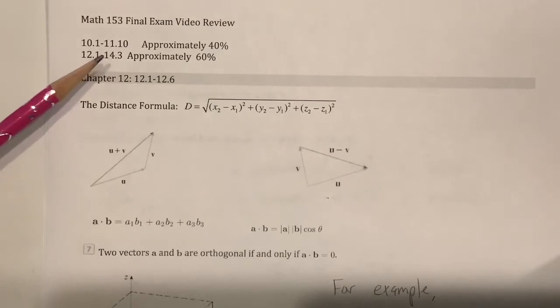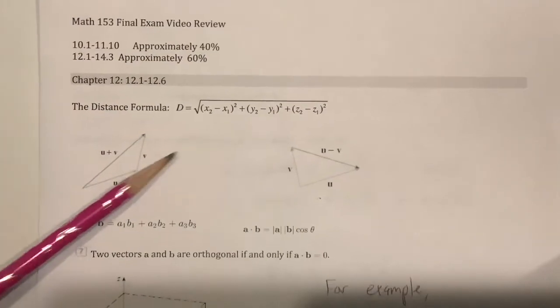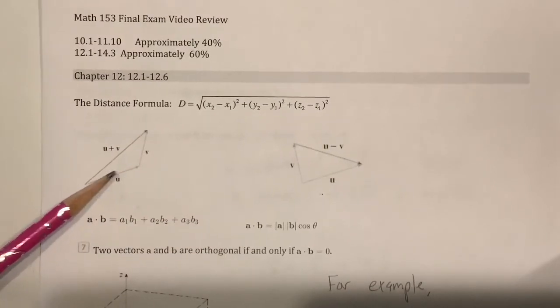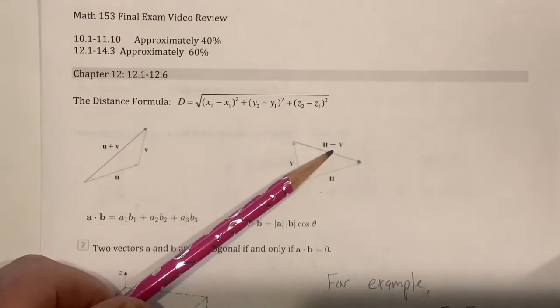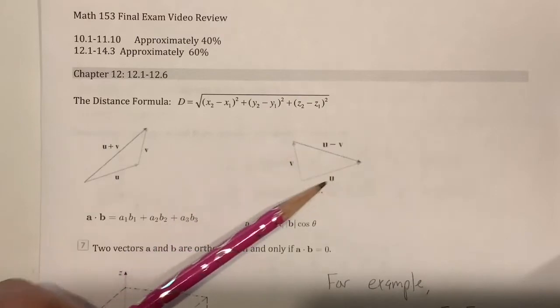This is not all you need to know. I'm just going to talk about the key ideas we covered. So in chapter 12 we covered the distance formula, covered vector addition and subtraction. Remember u minus v is the vector you add to v to get u, right?